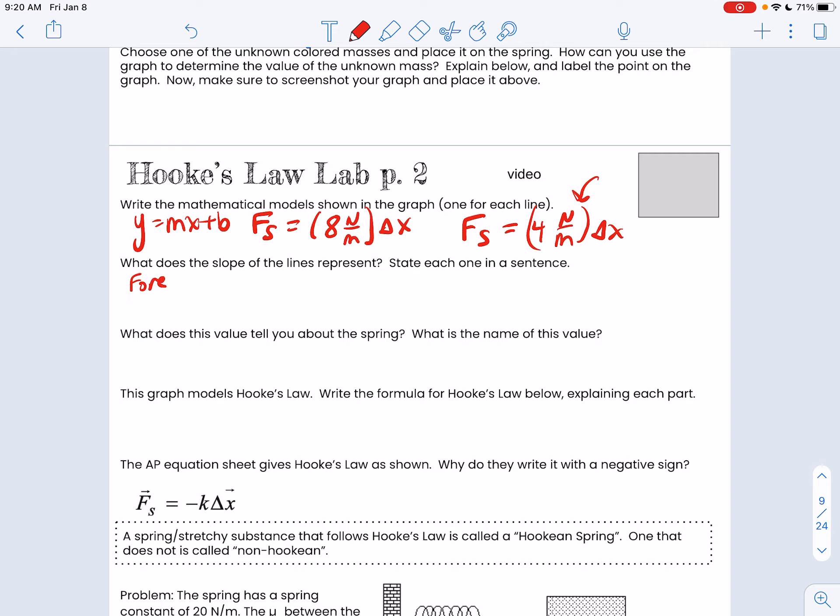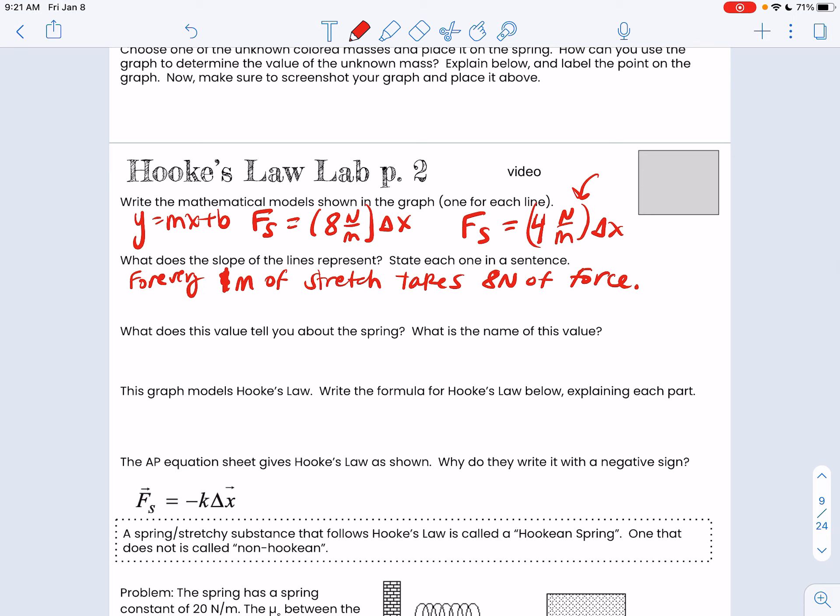Check these units—it should be newtons per meter. The slope of this is telling you for every one meter of stretch takes eight newtons of force, or provides eight newtons of force. For the second spring, you can stretch a meter with just four newtons of force. This is a difference in the spring itself. This value is what we call the spring constant, sometimes called the force constant. The spring constant basically tells you how strong or how stretchy the spring is. A big number means a very strong spring; not much force needed means a weak spring like a slinky. The higher that spring constant number is, the stiffer or harder the spring is to stretch or compress.